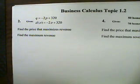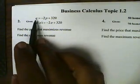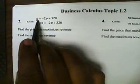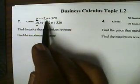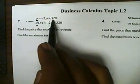This is Calculus, Topic 1.2. Problem number 2. We're given a demand function, which can be written as Q or D, which is negative 2 times the price plus 320.